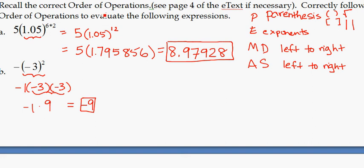So hopefully this all made sense. If not, you definitely need to review the order of operations on page 4 of the e-text.